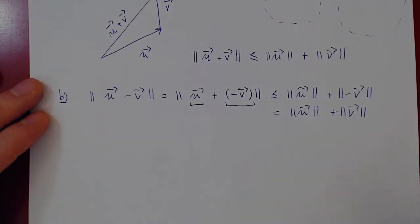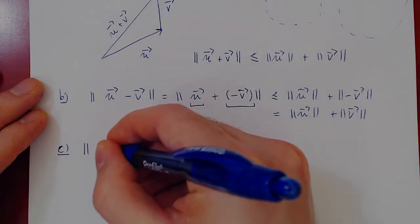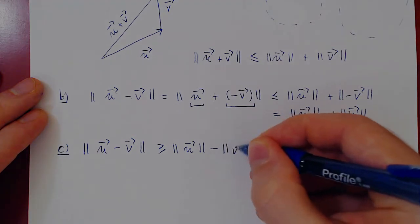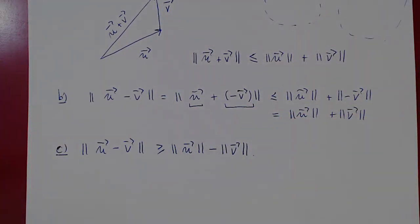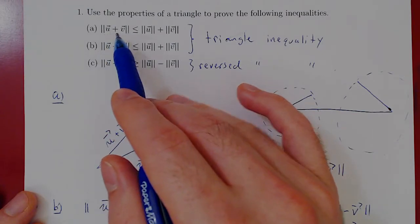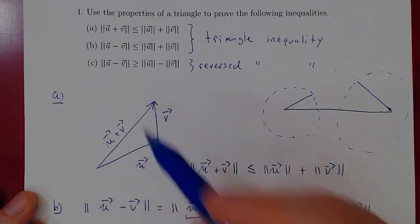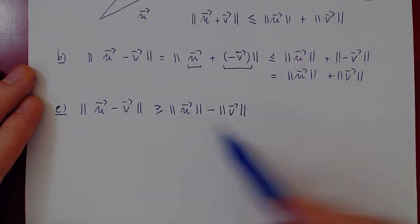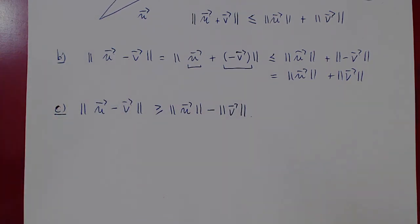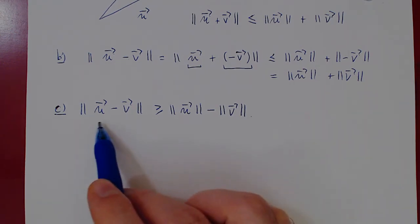To prove part (c), the reversed triangle inequality — which says the norm of u minus v must always be at least the absolute value of the norm of u minus the norm of v — I will let you prove this one. The idea is again to build a triangle and use the fact that for any triangle, the length of any edge cannot exceed the sum of the other two edges. Build a triangle whose edges are given by the vectors u, v, and u minus v, and it should take just one or two lines to prove the reversed triangle inequality.